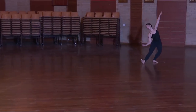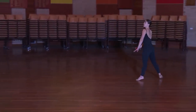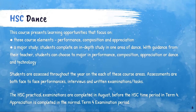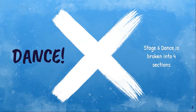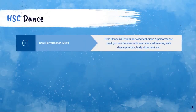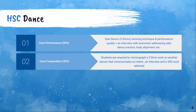Students are assessed throughout the year on each of these course areas. Assessments are both face-to-face performances, interviews, and written examinations or tasks. The HSC practical examinations are completed in August, which is before the HSC time period in Term 4. The appreciation exam, however, does take place in the Term 4 time slot. In the HSC, students are required to perform a dance on their own which goes for between three to five minutes. Additionally, they conduct an interview with the examiners for up to six minutes, focusing on safe dance practice and performance quality.